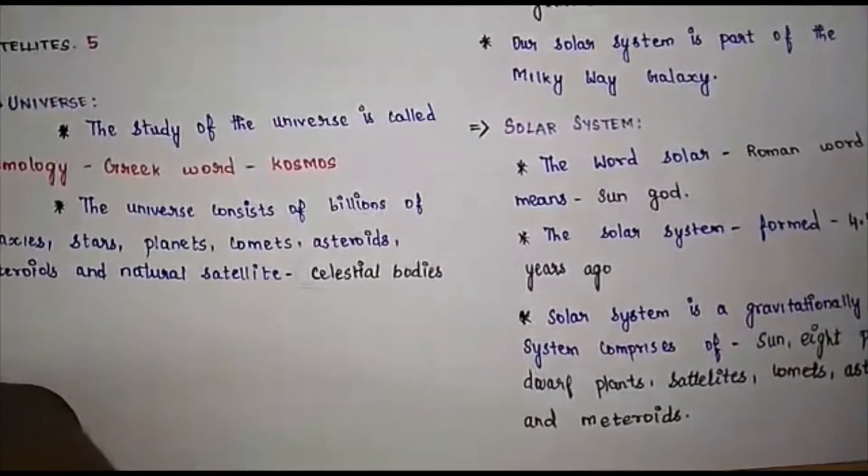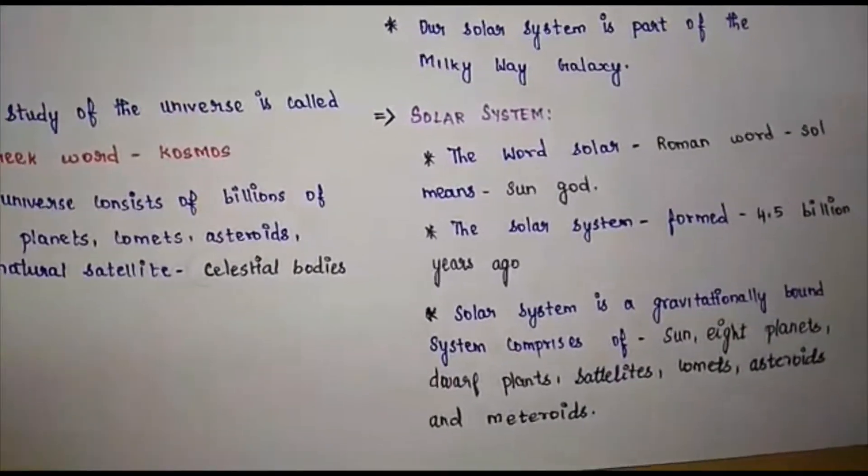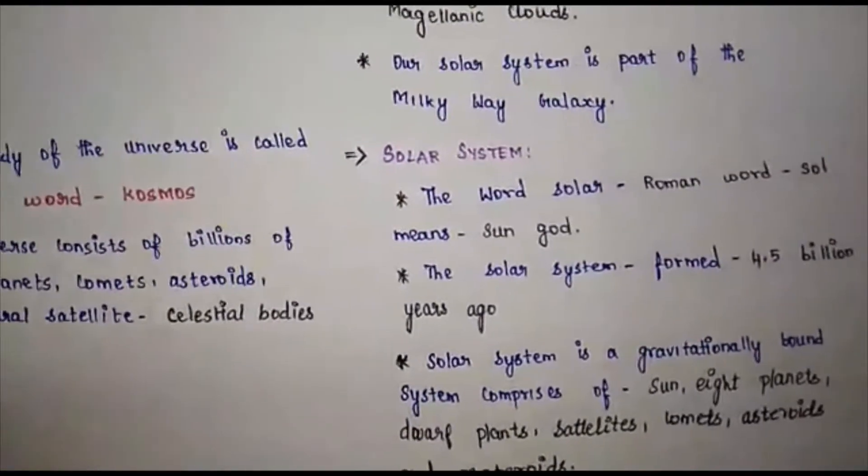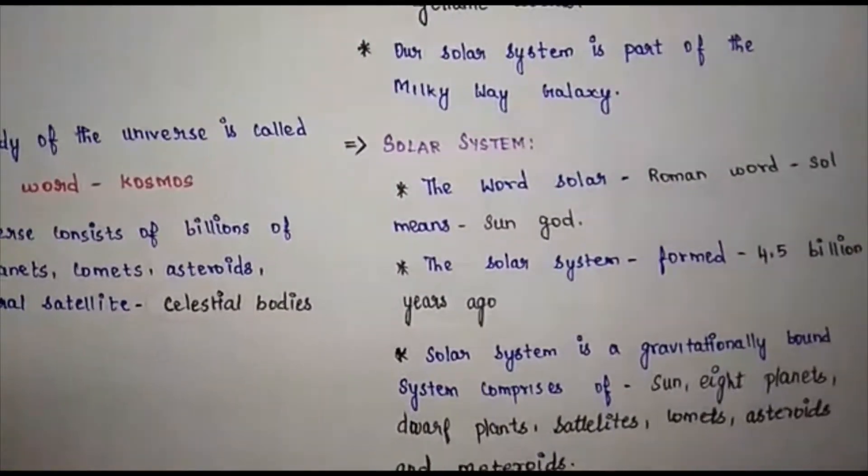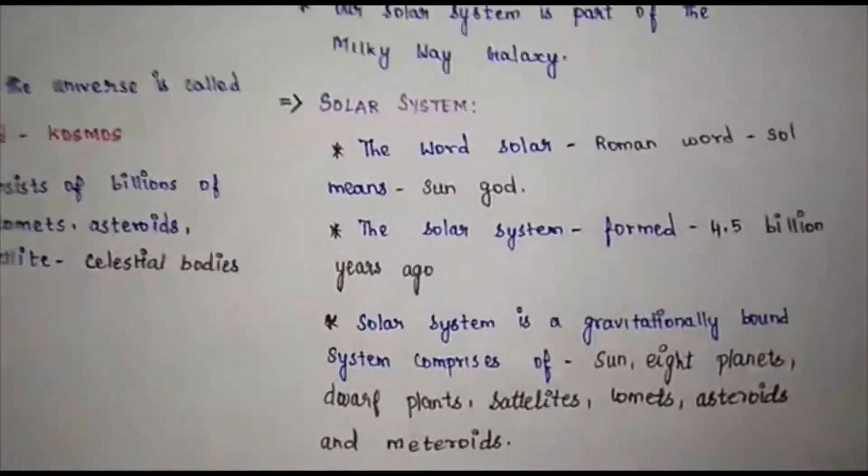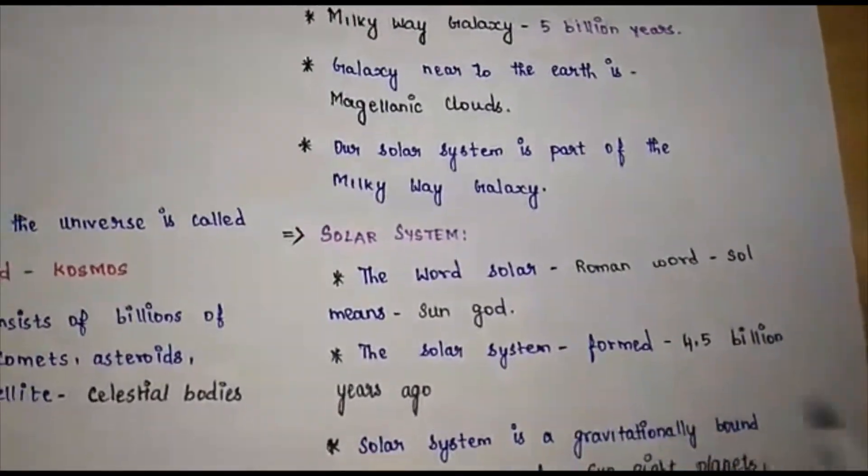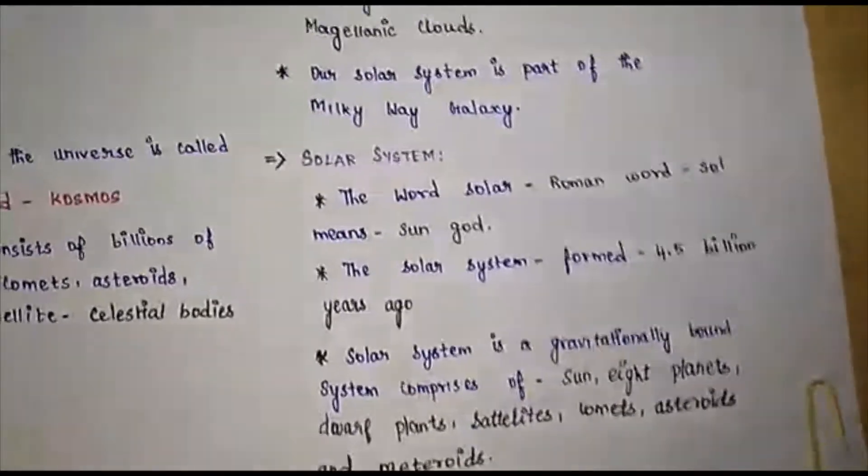Now we are going to see about the solar system. The word solar is derived from the Roman language. The word is 'sol', it means sun god. In Roman language, sol means sun god.